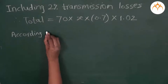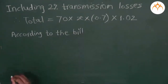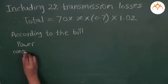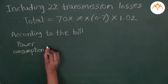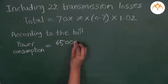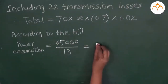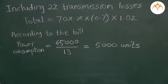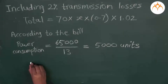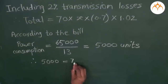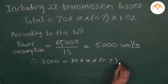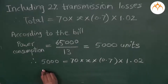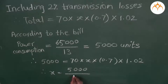Now let us look at what the bill tells us. According to the bill received from the electricity provider, the bill was 65,000 Rs and the rate was 13 Rs per unit. From that we get a total of 5000 units of electricity was used during that week. From our calculations, the total energy used is 70 × x × 0.7 × 1.02. Equating these two: 5000 = 70 × x × 0.7 × 1.02. Solving for x, we get x = 5000 ÷ 50 = 100.